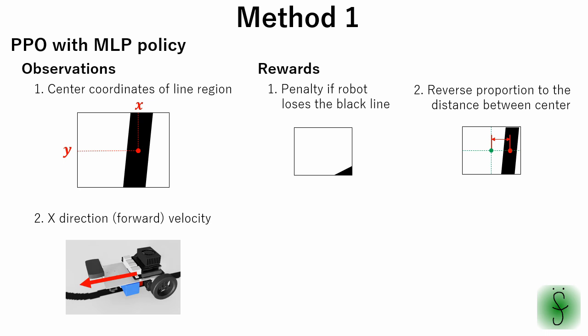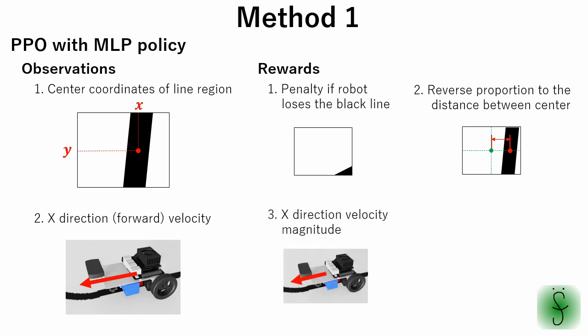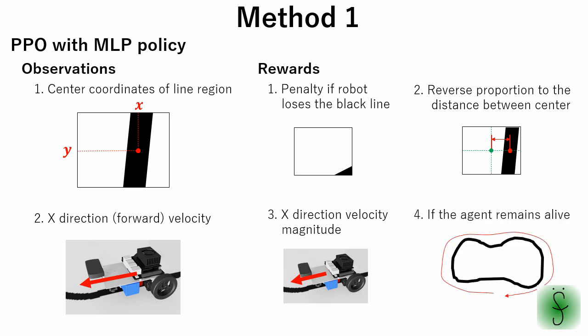This encourages the robot to follow the black line. We also give a positive reward proportional to the x-direction velocity of the robot. This encourages the robot to run as fast as possible. A small positive reward is also given if the robot stays alive, which also encourages the robot not to lose sight of the black line.